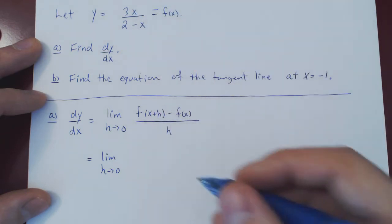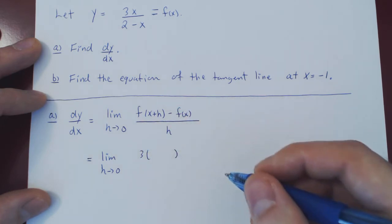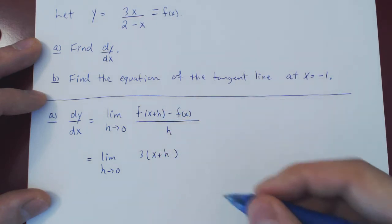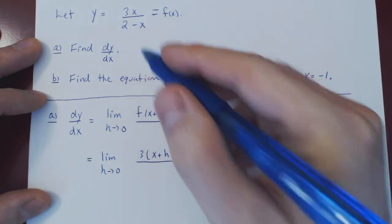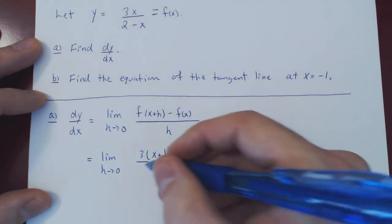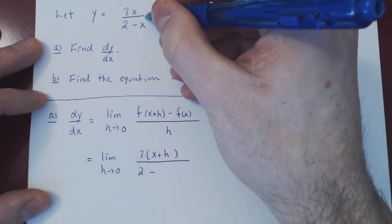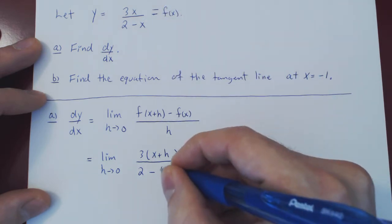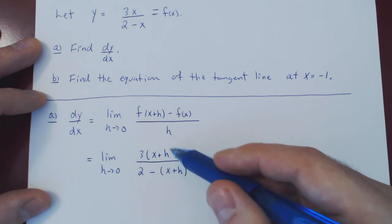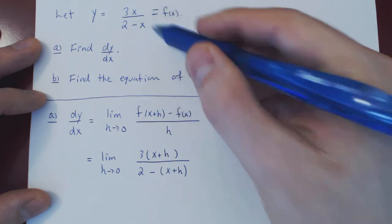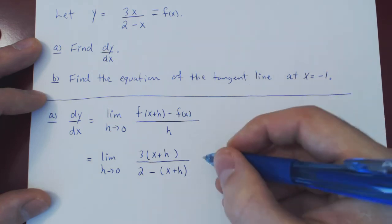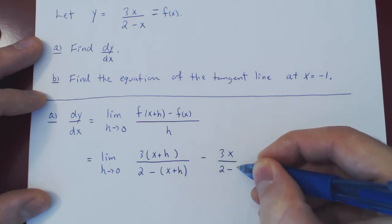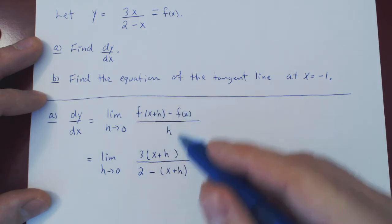This is three times x. Now we replace x — be careful to open your parentheses. Replace all of x by all of x plus h. So all of x plus h is multiplied by three over 2 minus x. Be careful — we do 2 minus the whole variable. So it's 2 minus, and now the whole x is negated, so all of x plus h must also be negated. Open your parentheses, minus all of x plus h. And now you have f of x plus h, replacing everywhere x by x plus h. Minus f of x — that's easy, we already have f of x.